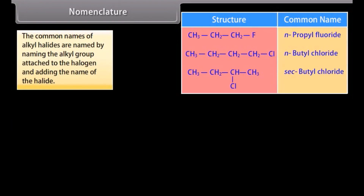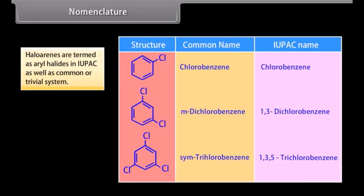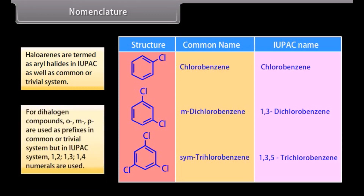Nomenclature: The common names of alkyl halides are formed by naming the alkyl group attached to the halogen and adding the name of the halide. In the IUPAC system, alkyl halides are named as halogen-substituted hydrocarbons. Haloarenes are termed as aryl halides in both IUPAC and common systems. For dihalogen compounds, ortho, meta, and para are used as prefixes in the common system, but in IUPAC, numerals 1,2; 1,3; and 1,4 are used.